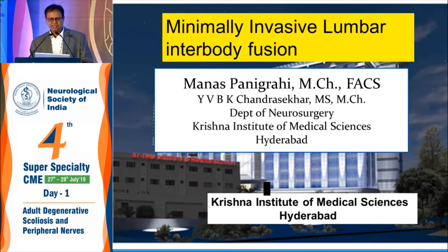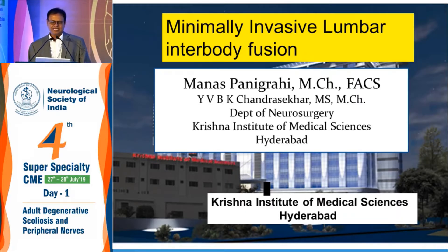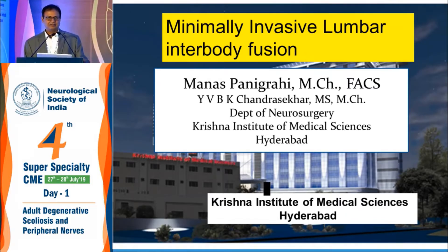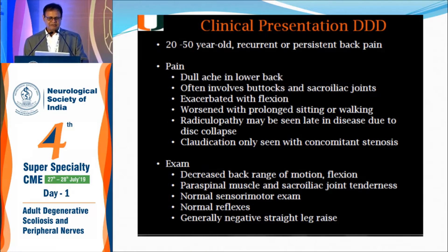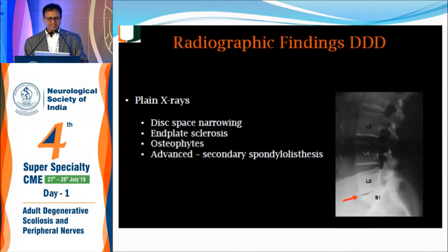I'm speaking on three types of anterior fusion — minimally invasive anterior lumbar fusion, XLIF, and OLIF — but I'll focus on our experience with OLIF. This is a classical case of degenerative spine patients who come to us — usually men around 50 years with dull aching back pain — who must have tried all types of medical management and seen at least half a dozen neurosurgeons, and are dissatisfied.